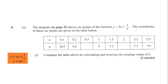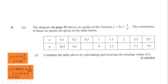We'll find those using the formula y = 3x + 1/x. To find y when x = 0.5, we substitute 0.5 into the formula. So y = 3 × 0.5 + 1/0.5. That gives us 1.5 + 2, so y = 3.5.